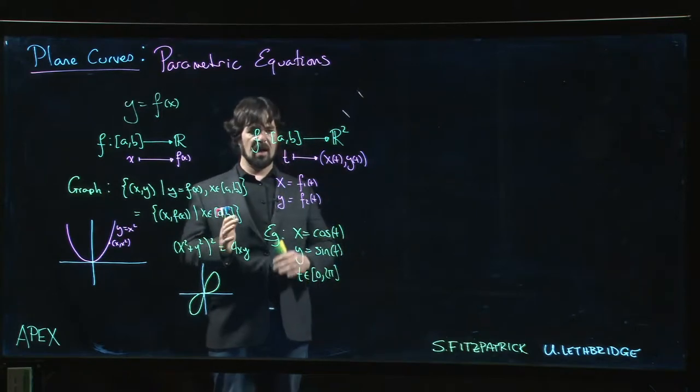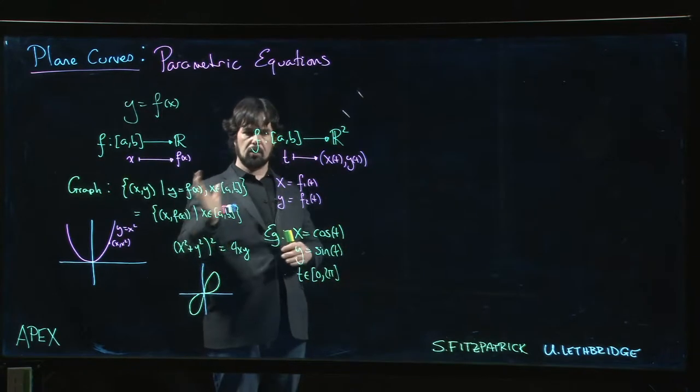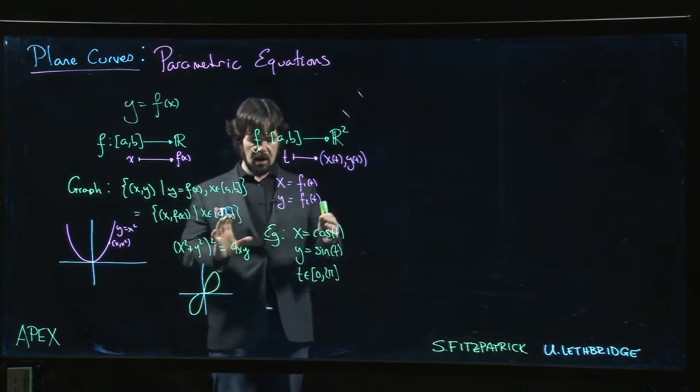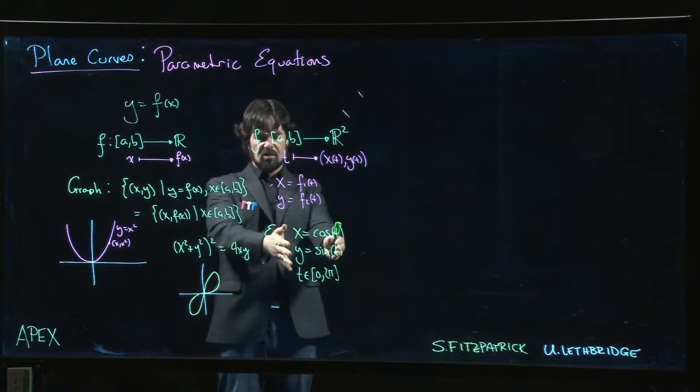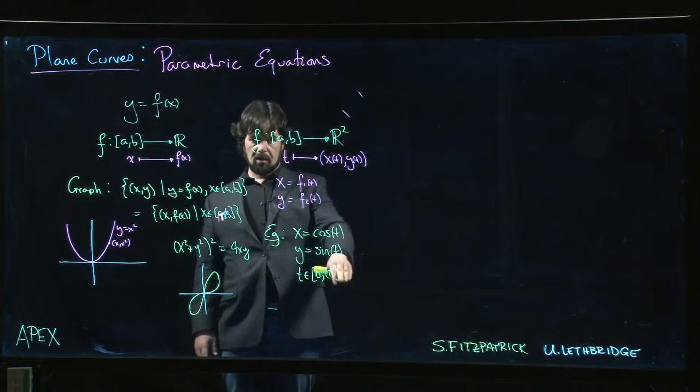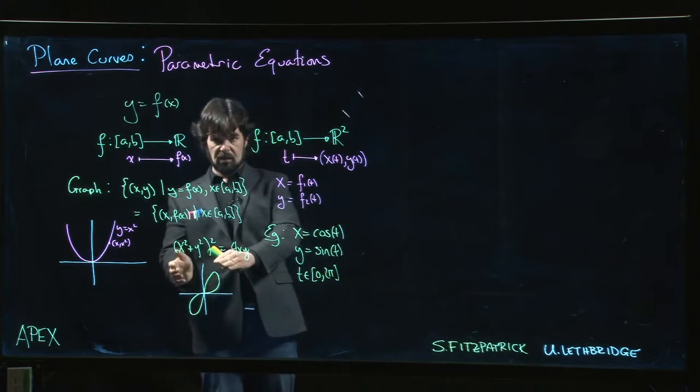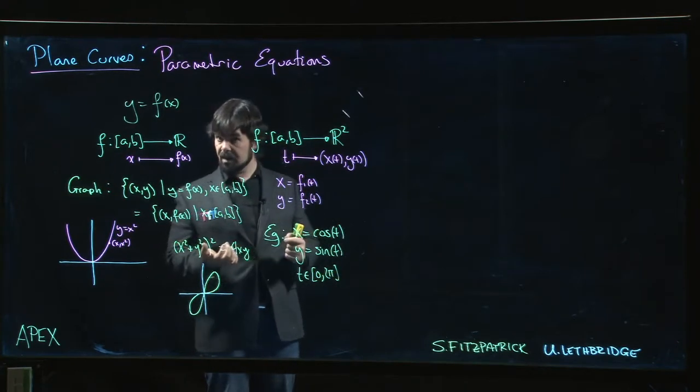So that's what we're going to be looking at. We're going to be looking at, how do we actually plot curves that are defined this way? How do we, if we're given parametric equations, can we essentially eliminate that parameter T and come back to something that looks like this?